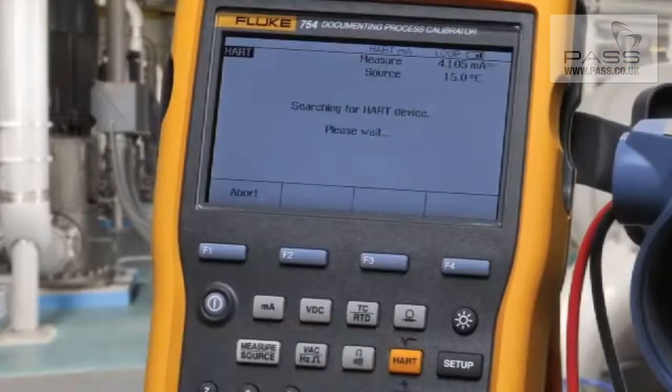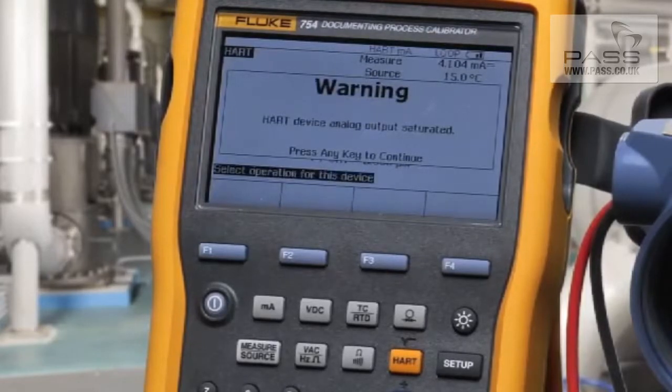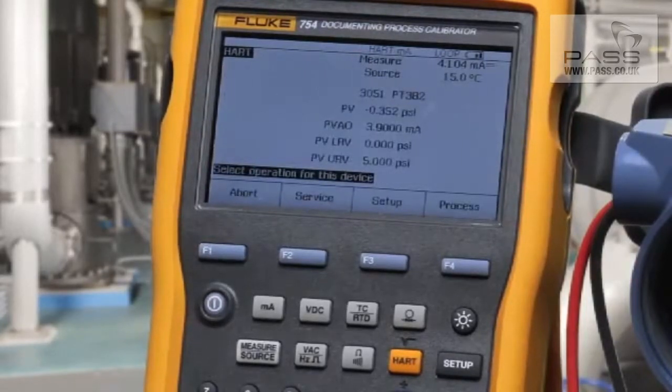First, we select HART. In this instance, we have the HART signal driven through the milliamp measurement terminals rather than through the separate digital connector, and the 250 ohm resistor is automatically connected in.